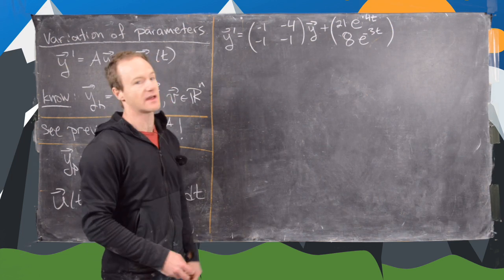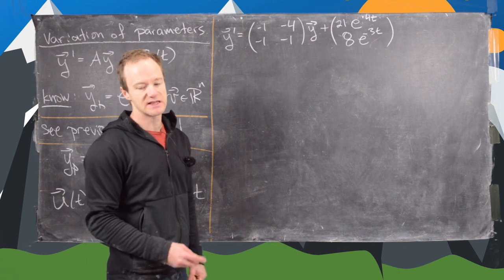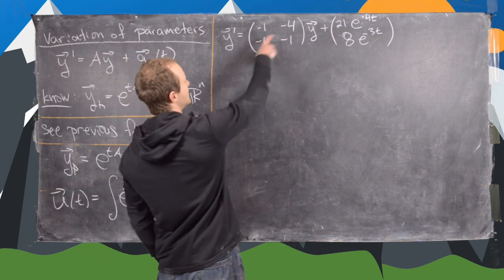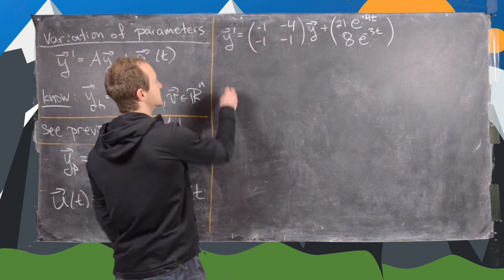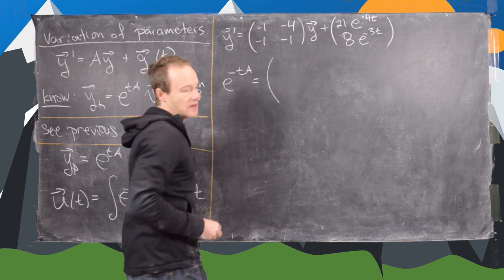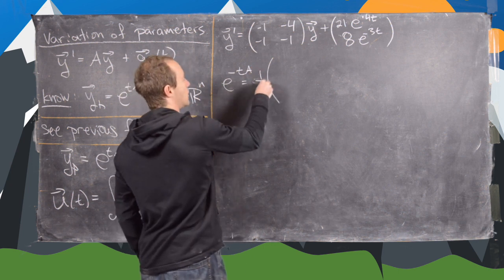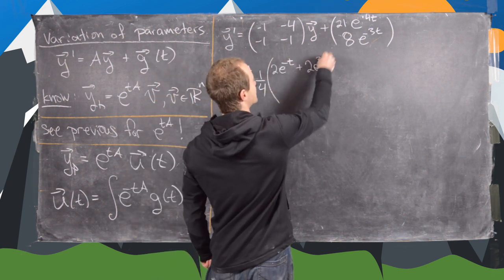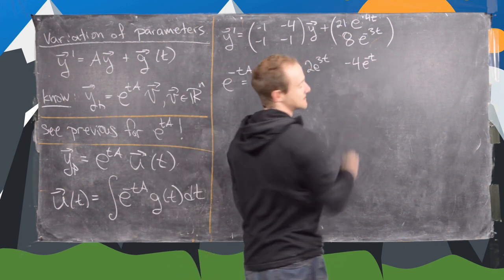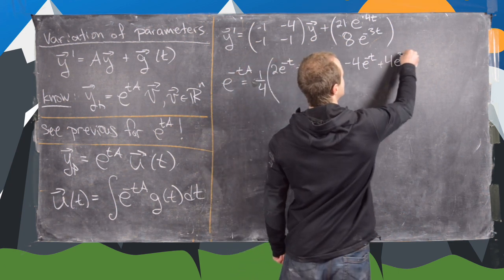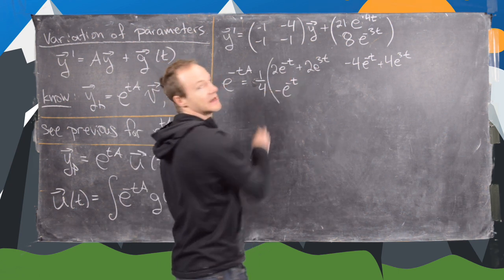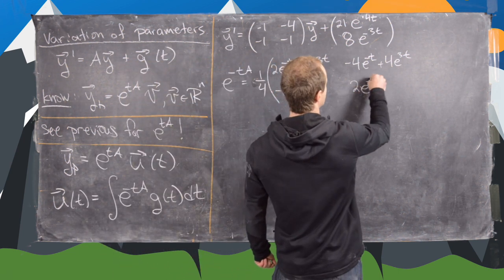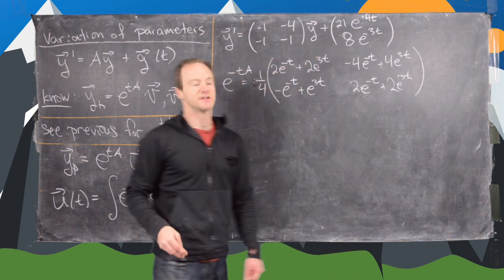The first thing we need to do is calculate e^(tA) and e^(-tA). I'll give you e^(-tA) and let you look at previous videos for calculating e^(tA), although you can just take the inverse. So e^(-tA) equals one quarter times the matrix with entries: top-left 2e^(-t) + 2e^(3t), top-right -4e^(-t) + 4e^(3t), bottom-left -e^(-t) + e^(3t), bottom-right 2e^(-t) + 2e^(3t).